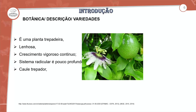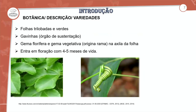O sistema radicular é pouco profundo e o caule é trepador. Ela é sempre produzida em relação à estrutura de uma planta trepadeira, precisando de encostas ou algo para que possa ficar em pé e facilitar os tratos culturais. Temos aí estruturas morfológicas da produção do maracujá: são estruturas foliares e vegetativas modificadas que auxiliam nesse processo de cultivo.